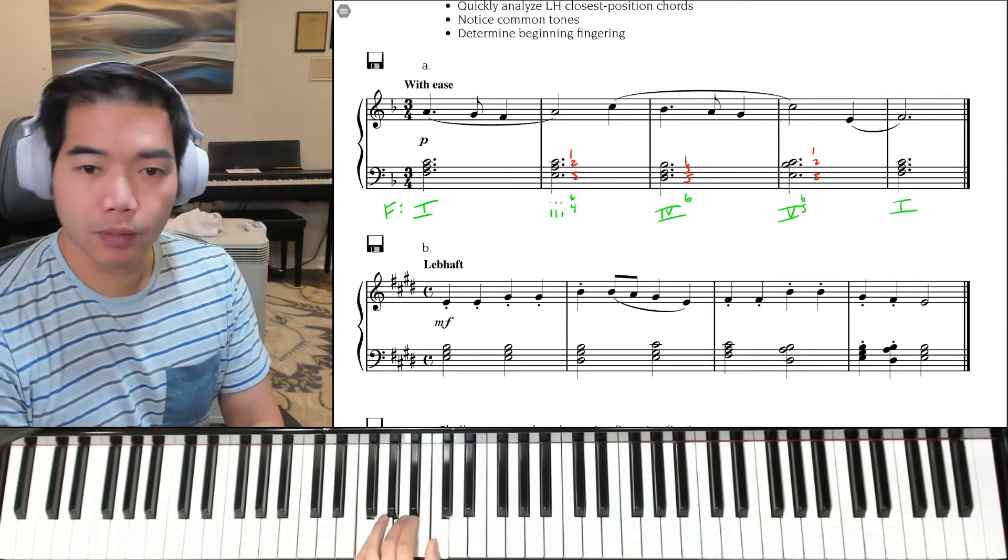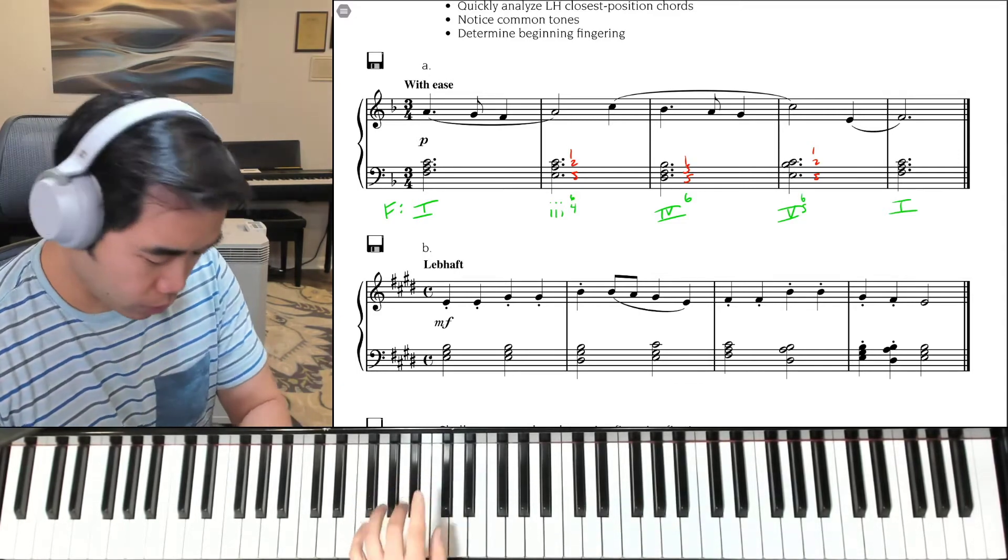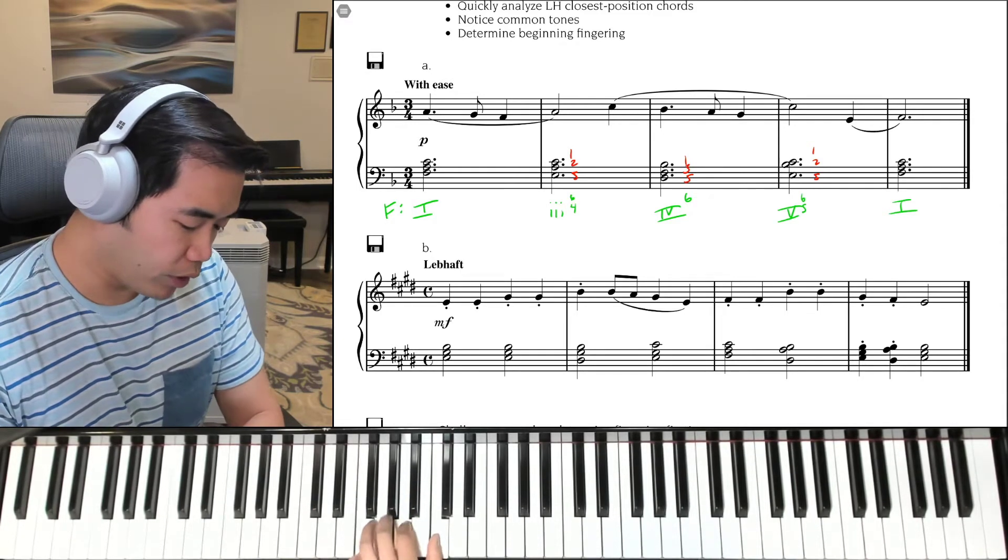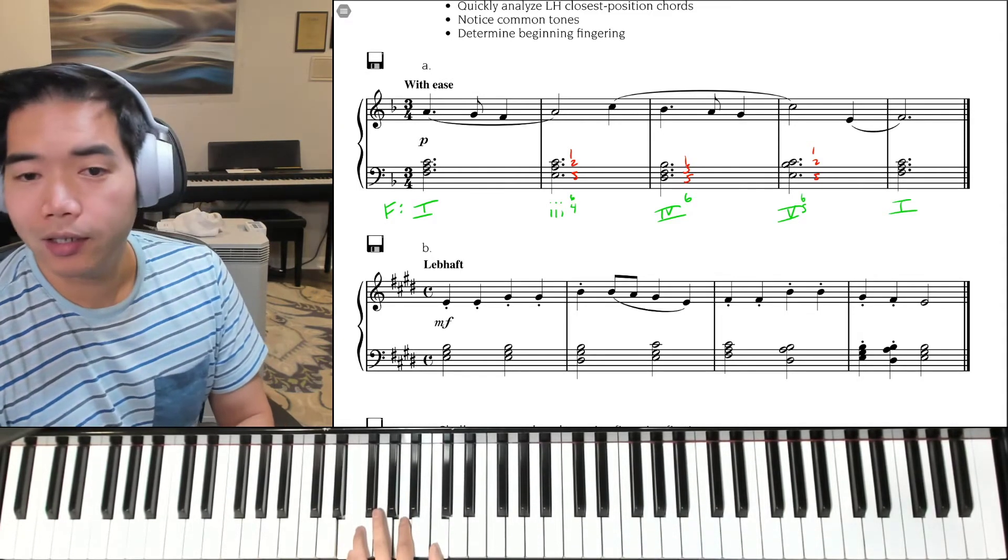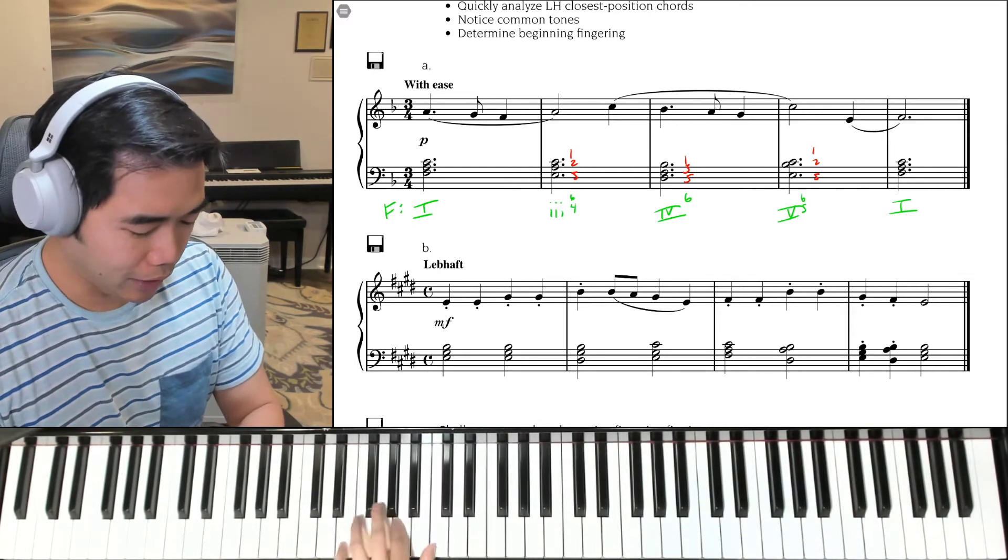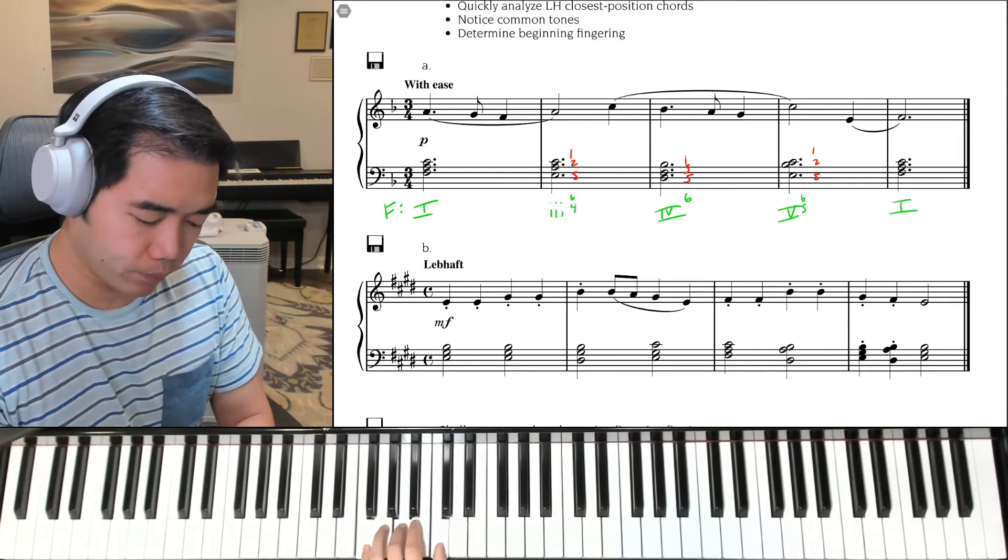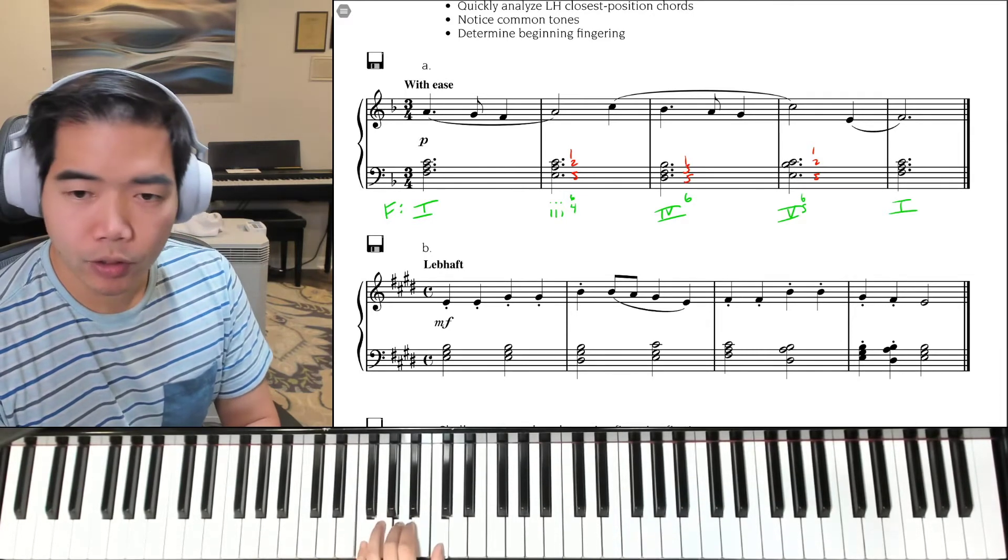Let's try playing these as block chords. A 1 chord, F major. To get to the minor 3 chord, all you're going to do is move your 5th finger down to E. Like that, so very easy. Let's try going from the 1 chord to the 3 chord. Like that. So notice the top 2 notes stay the same.